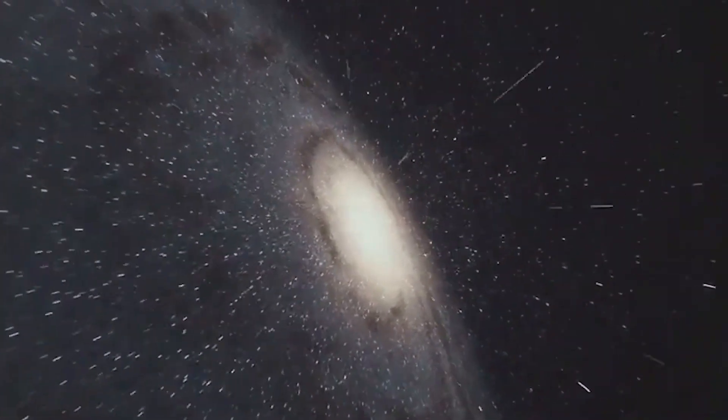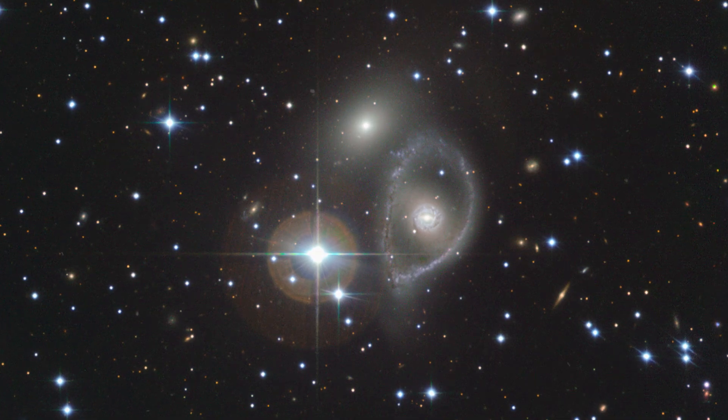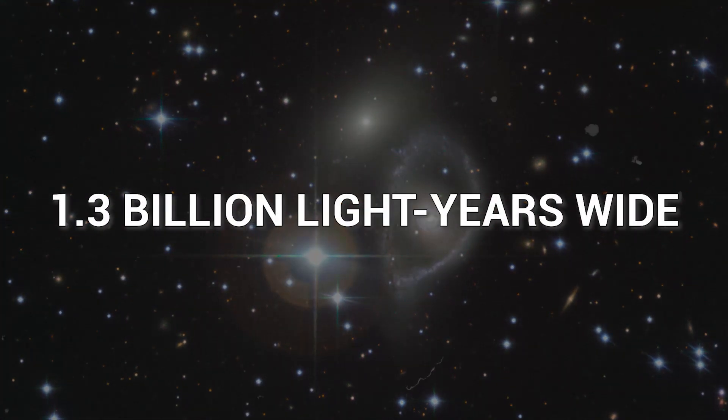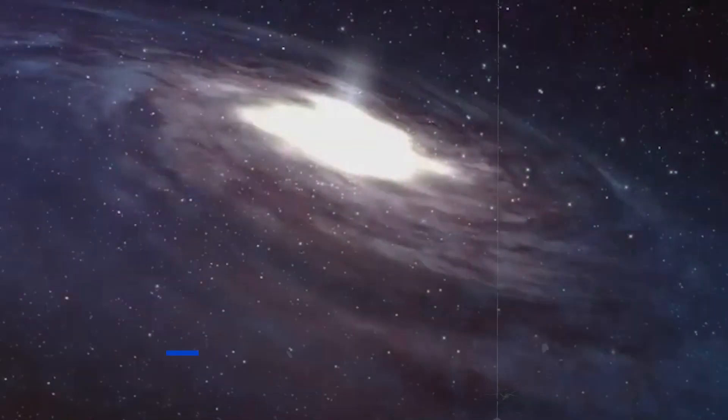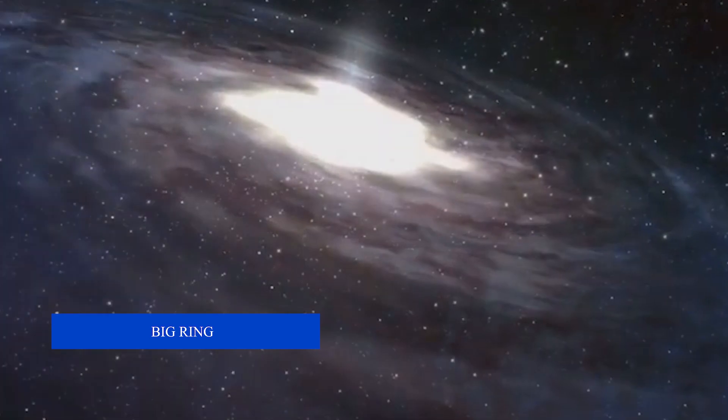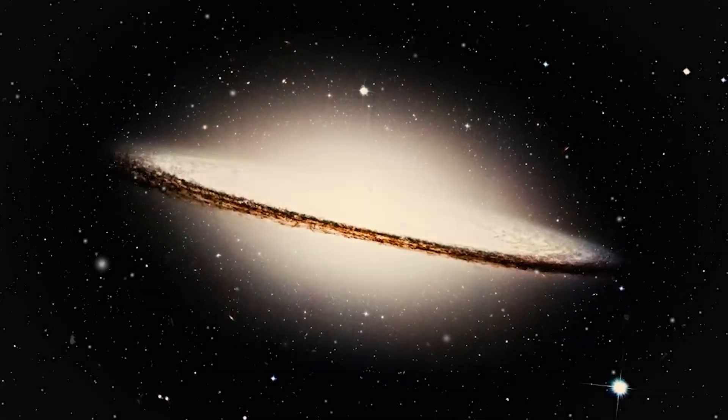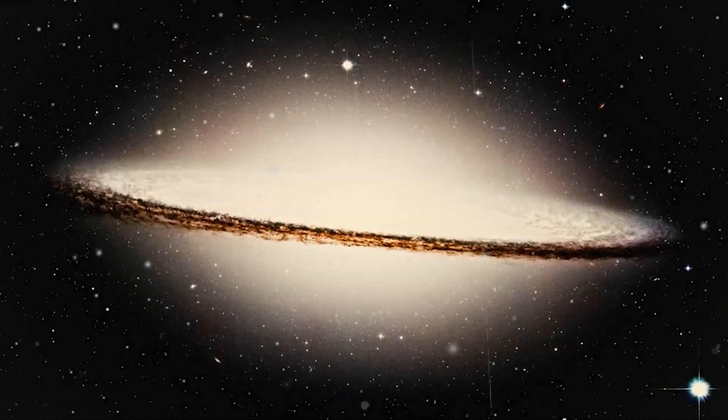Deep space just served as a cosmic curveball. Astronomers have stumbled upon a gargantuan ring of galaxies, 1.3 billion light-years wide, lurking in the distant universe. This Big Ring defies everything we know about how the cosmos formed, its perfectly circular shape and immense scale throwing a wrench into our current understanding of the universe's evolution.